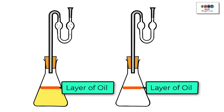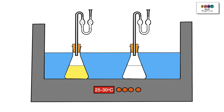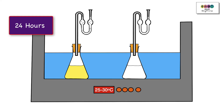In some books you'll see that a layer of oil is also added to both vessels to maintain anaerobic conditions, but this is optional and not necessary because the fermentation lock is already doing that. When everything is set up, transfer both vessels into a water bath set between 25 and 30 degrees Celsius, or into an incubator, and leave for 24 hours.